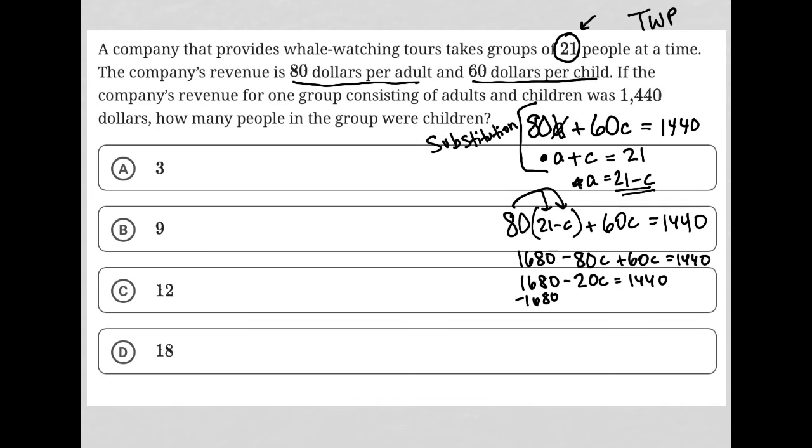Subtract 1680 from both sides. I'm doing this to get down to solving for C. I'm left with negative 20C is equal to negative 240, and then divide both sides by negative 20.